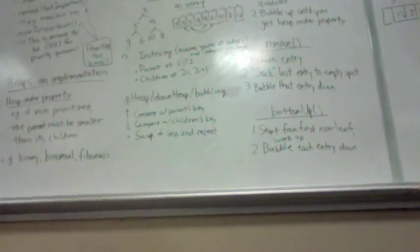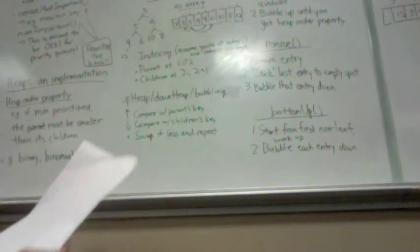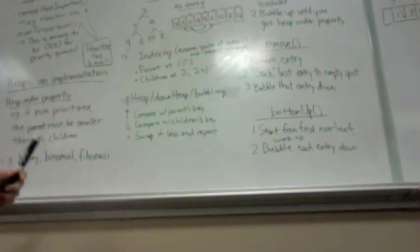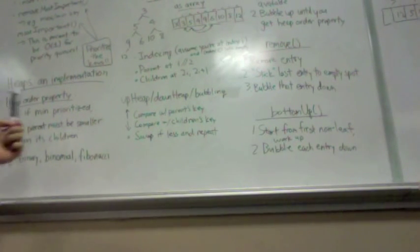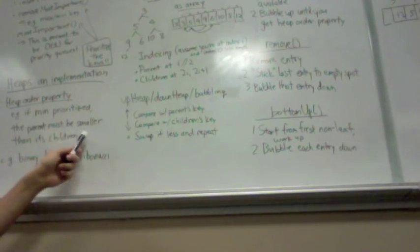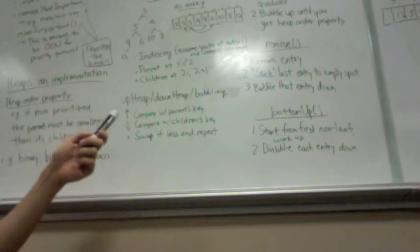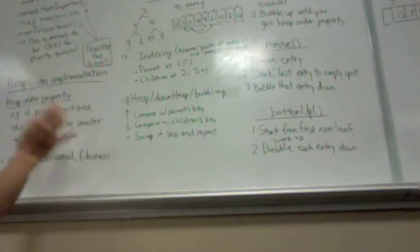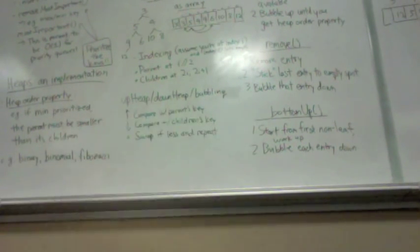But first let's review what the big picture is. We're trying to implement a priority queue using the priority queue ADT using a heap. The heap has the heap order property where, for example, if you have the min, the parent must be smaller than its children. Or if the max is prioritized, then the parent must be larger than its children. It should make sense intuitively once you see what's going on with the binary heap.